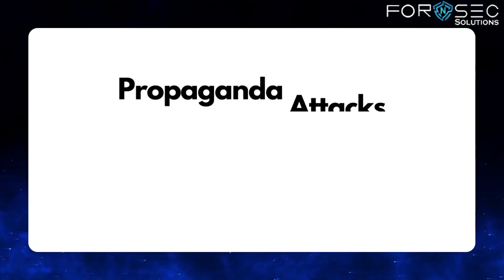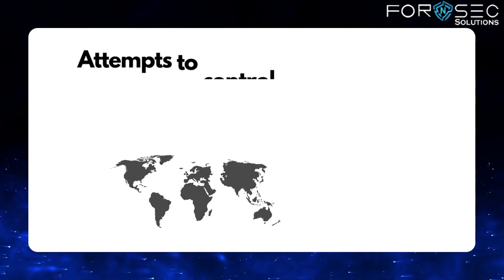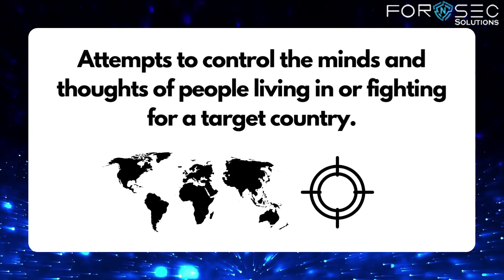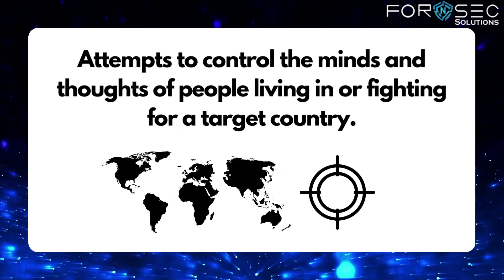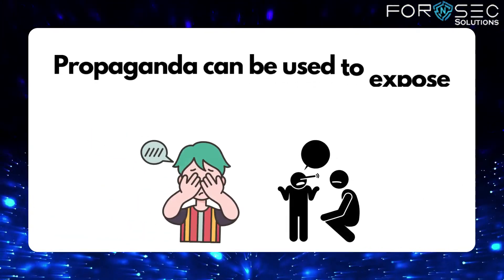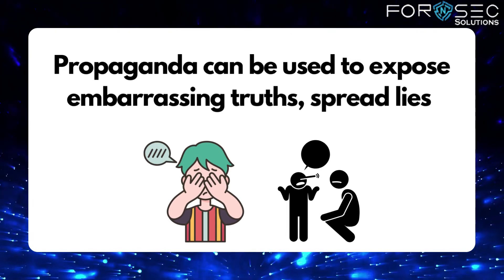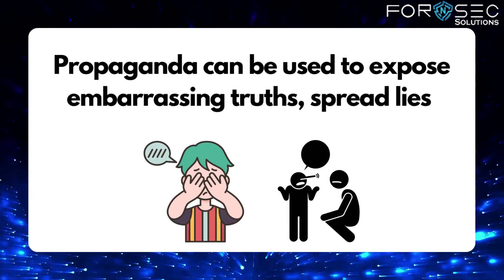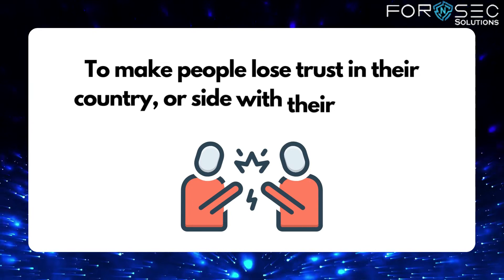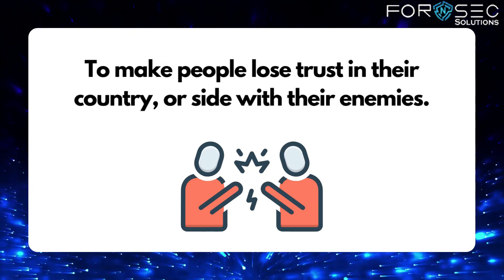Fourth is Propaganda attacks — attempts to control the minds and thoughts of people living in or fighting for a target country. Propaganda can be used to expose embarrassing truths or spread lies to make people lose trust in their country or side with their enemies.